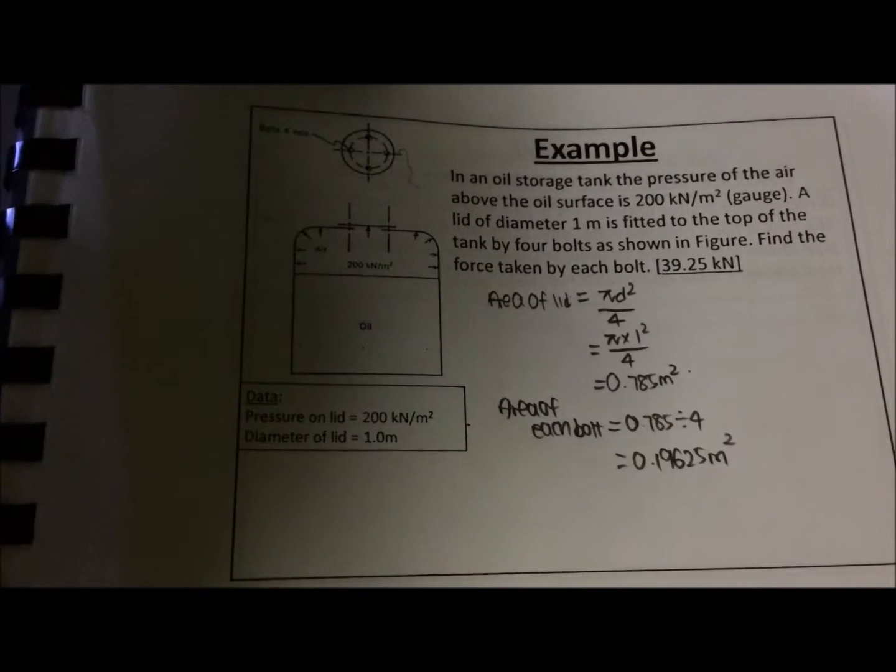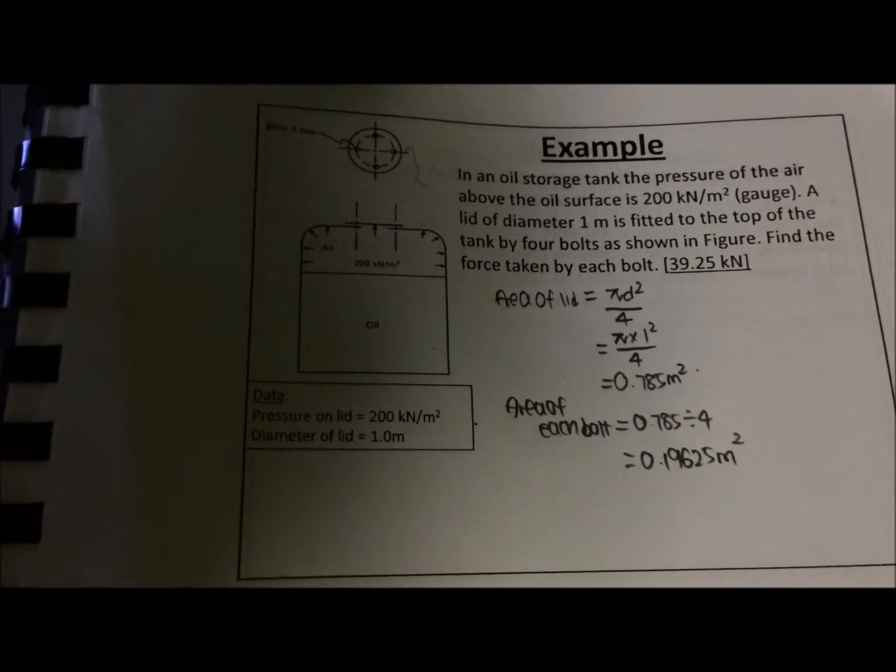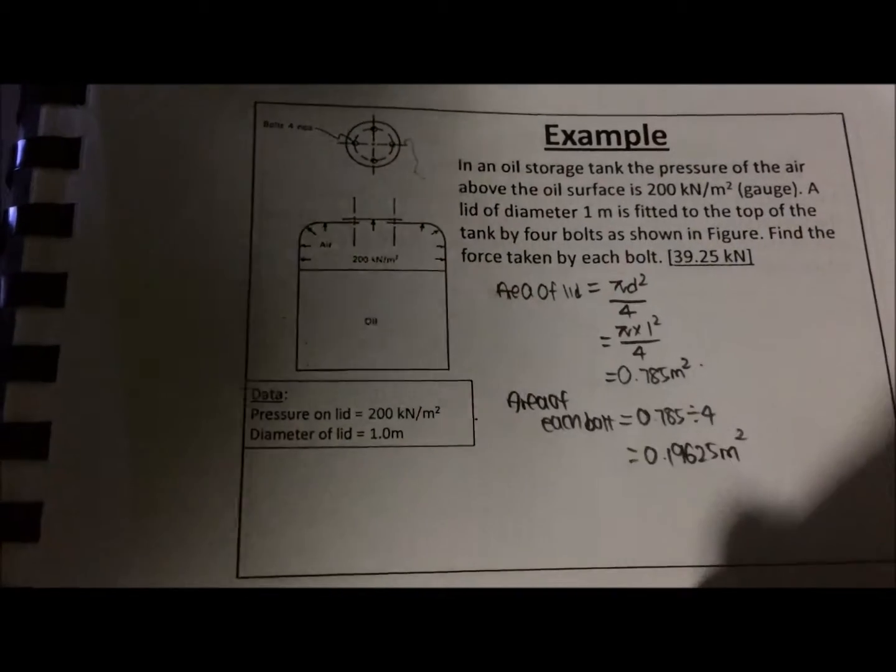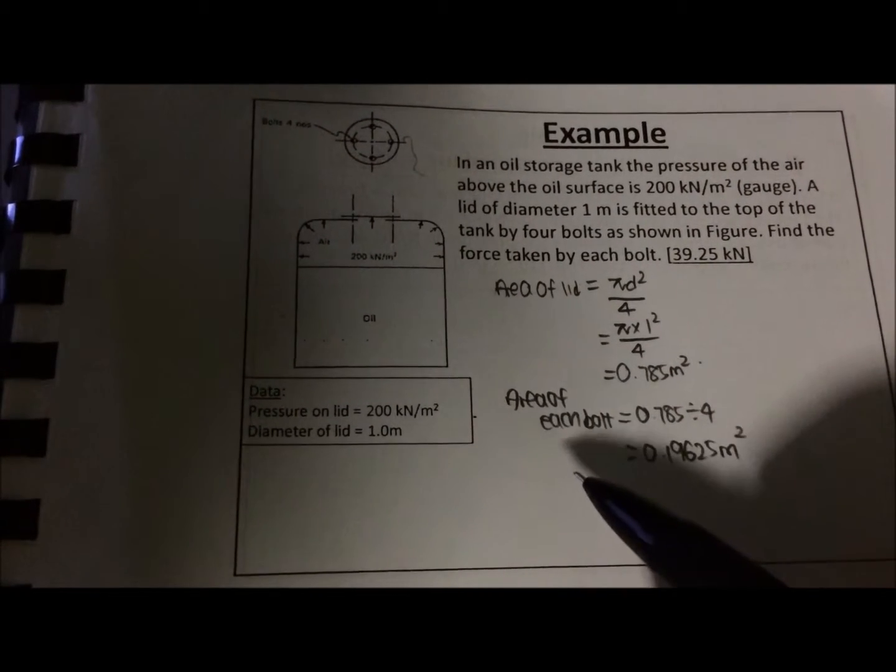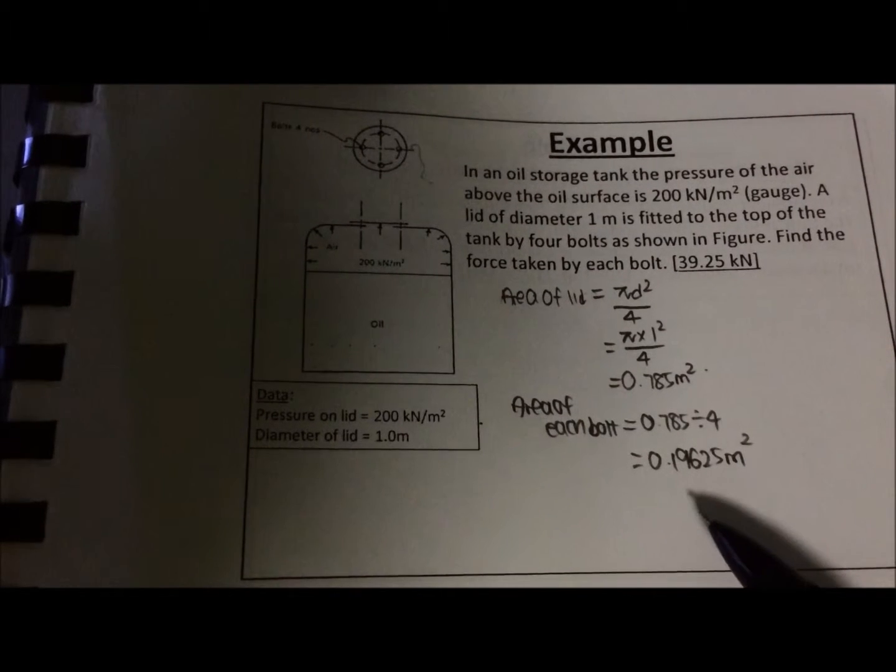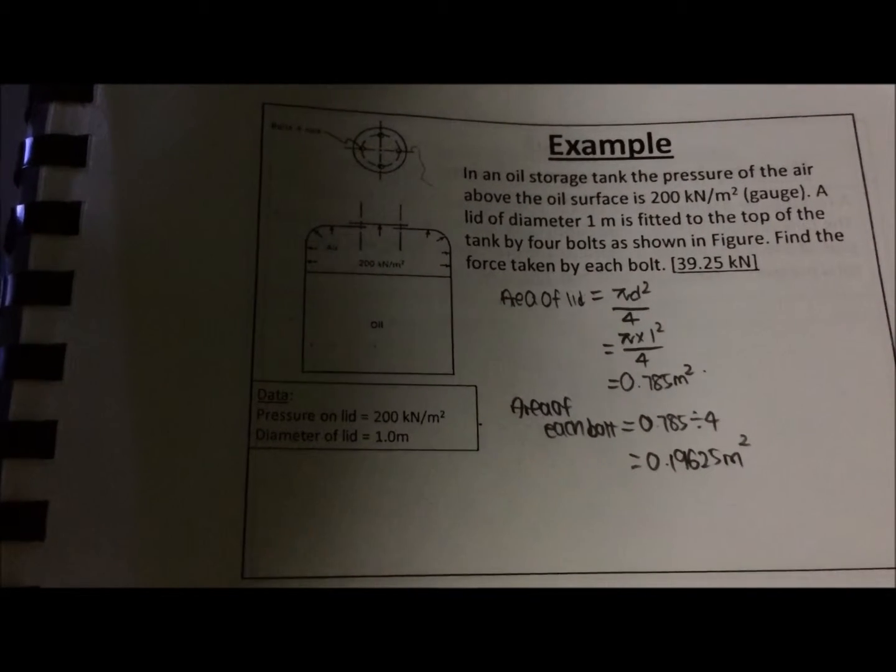So next, we are asked to find the force taken by each bolt. Right now we have found that the area of each bolt is 0.19625, and in order to find the force, we use pressure times the area.